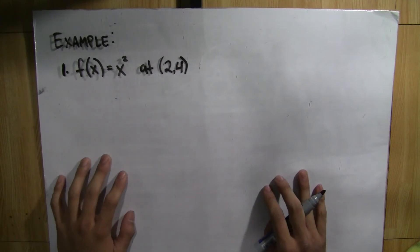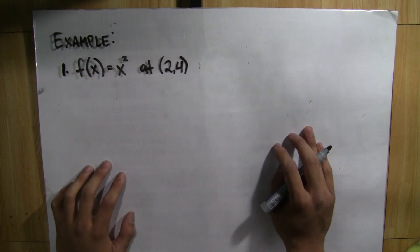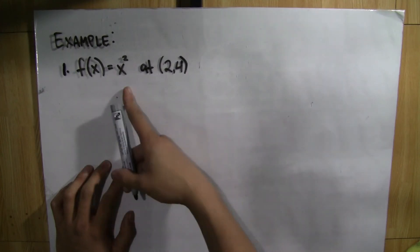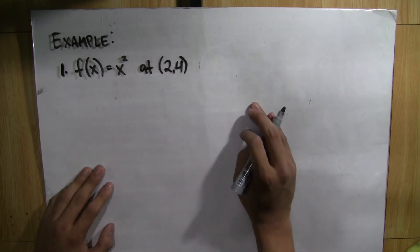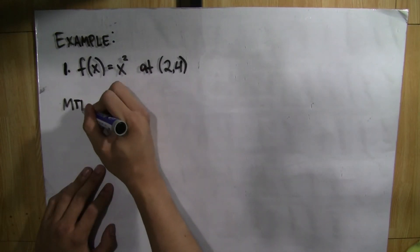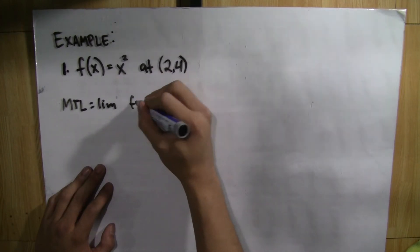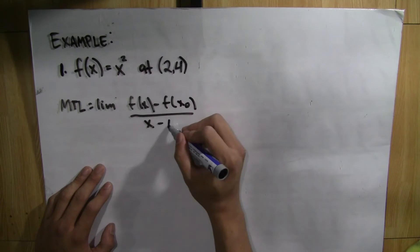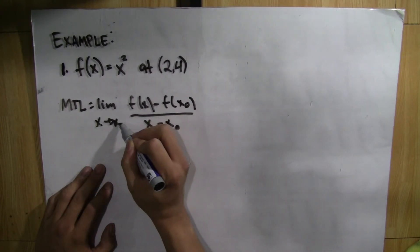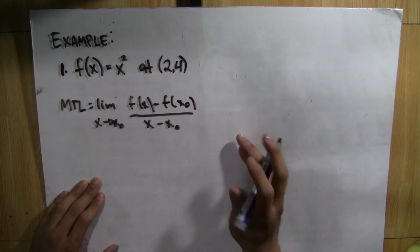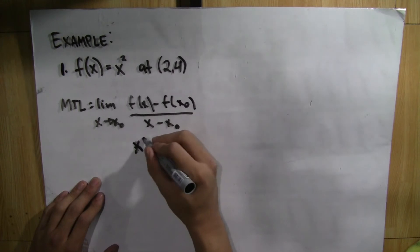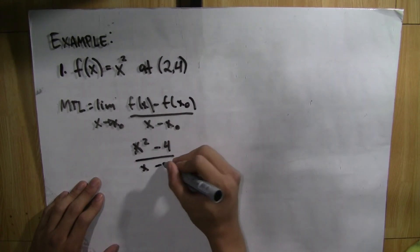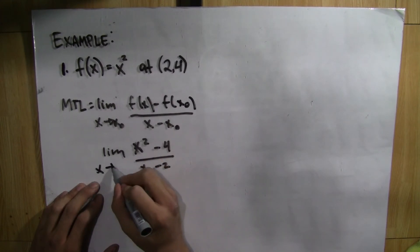To use what we have learned earlier, we consider this example. Now we know to get the equation of the tangent line, we both need the point of tangency and the slope of the tangent line. Given is a function and its point of tangency, so the first step is to identify the slope of the tangent line. Given the equation: limit of F of x minus F of x-sub-0, all over x minus x-sub-0, as x approaches x-sub-0. Now we substitute, where F of x will be x-squared, F of x-sub-0 will be 4, x will remain x, and x-sub-0 will be 2, as x approaches 2.